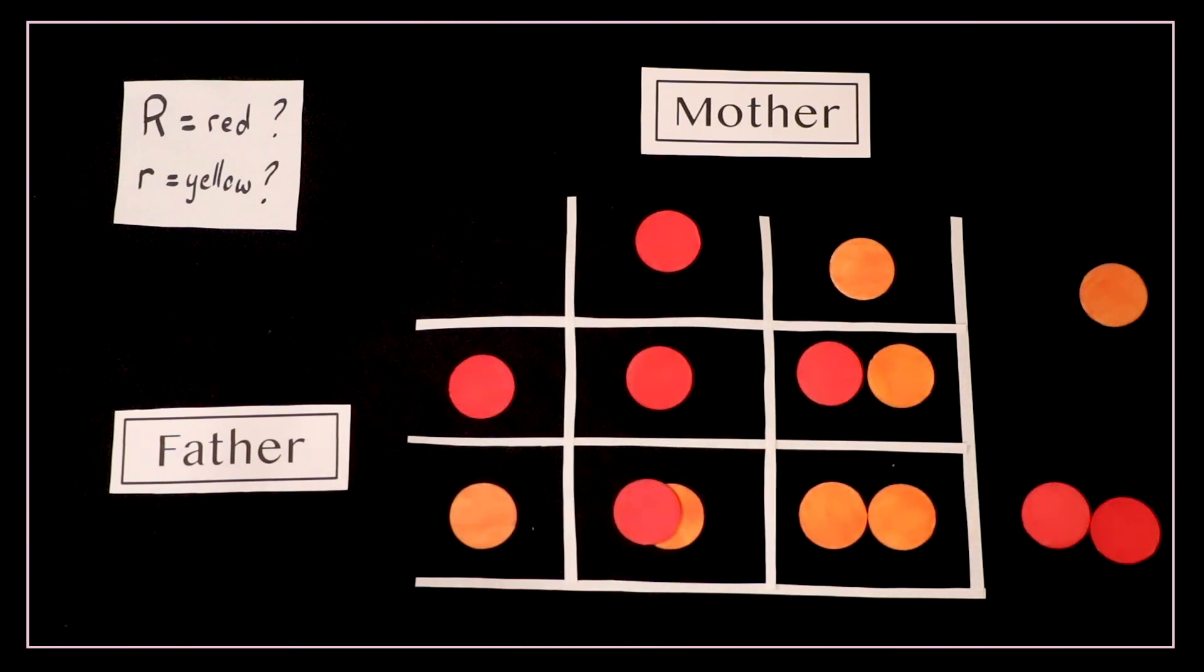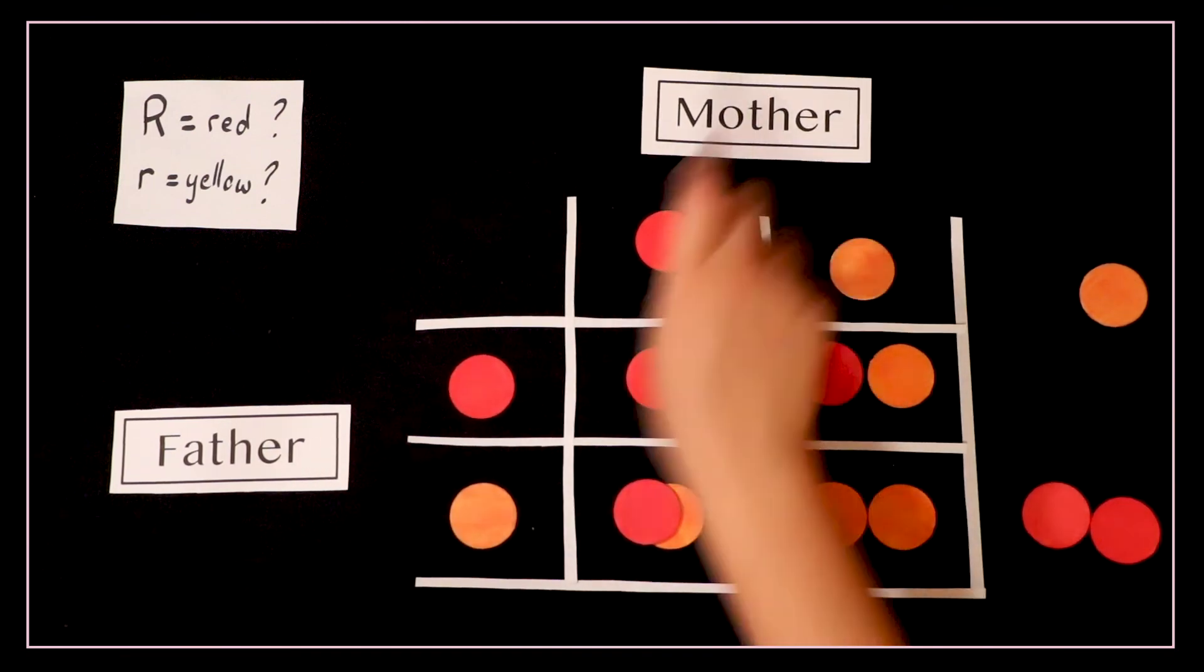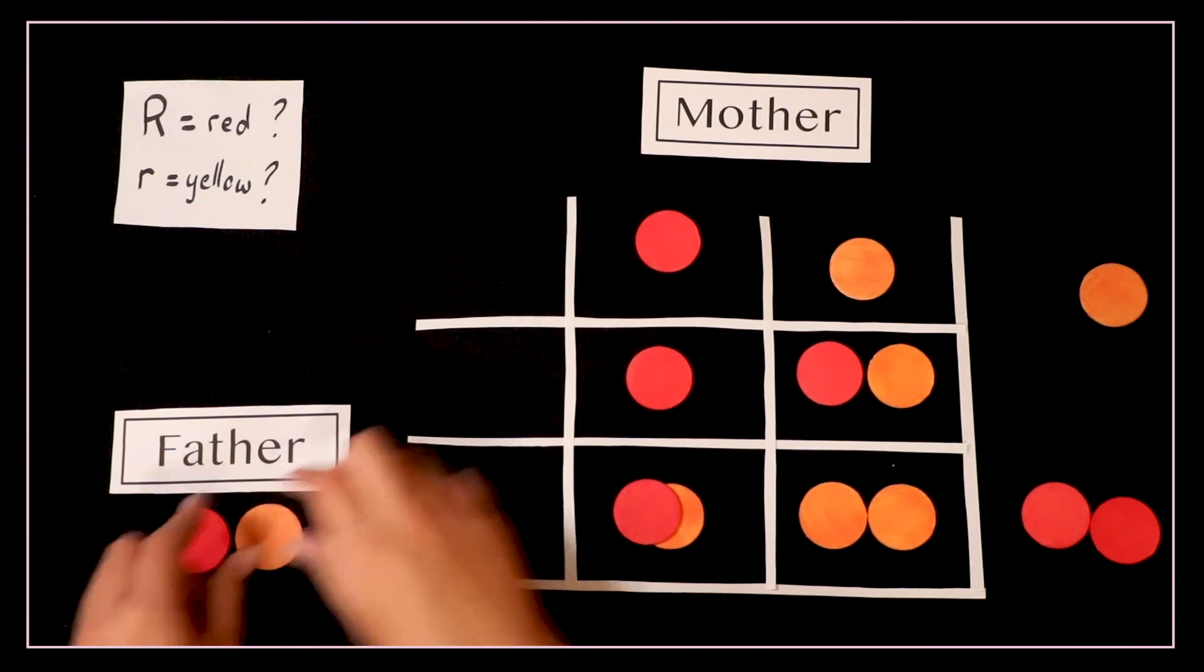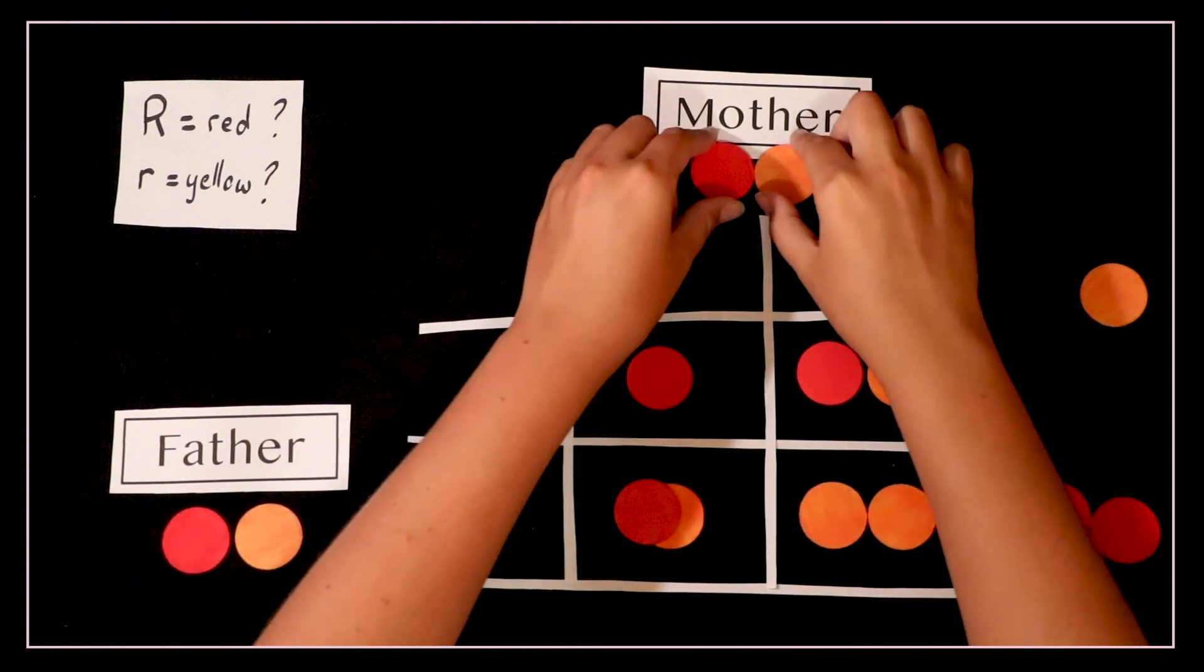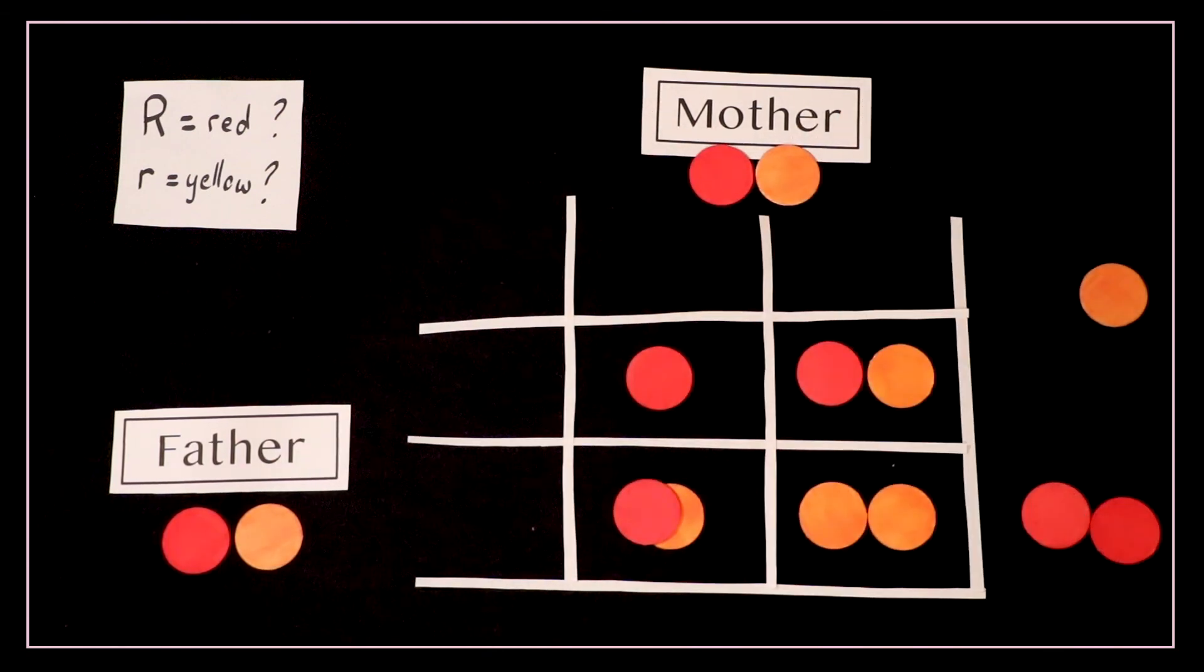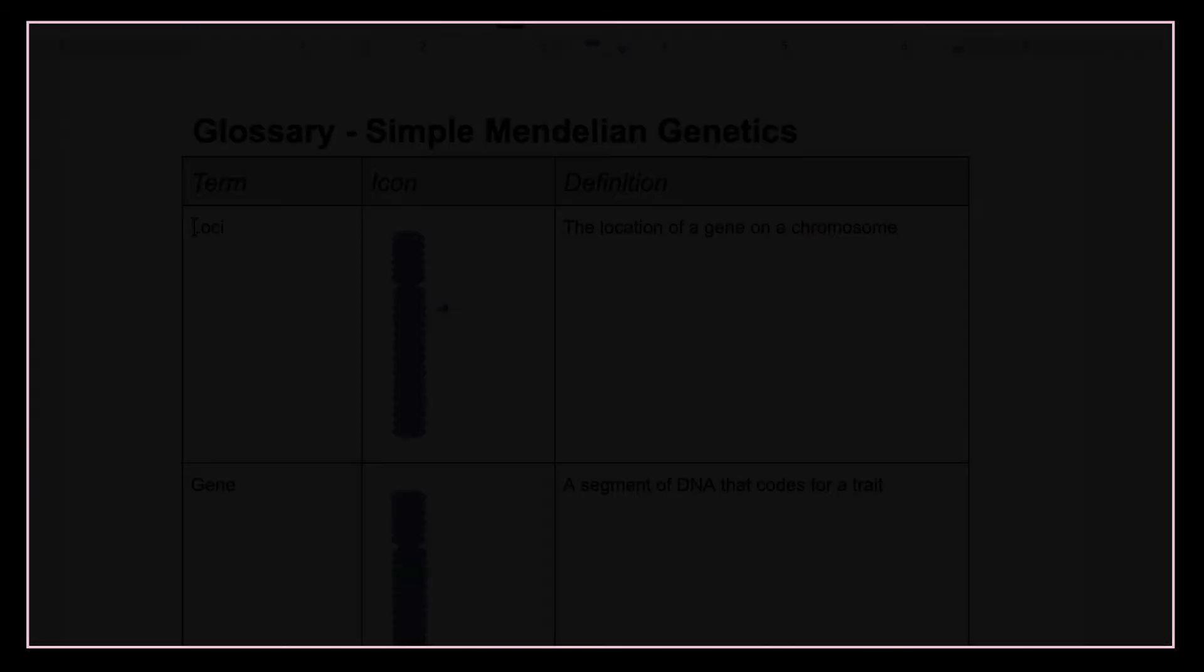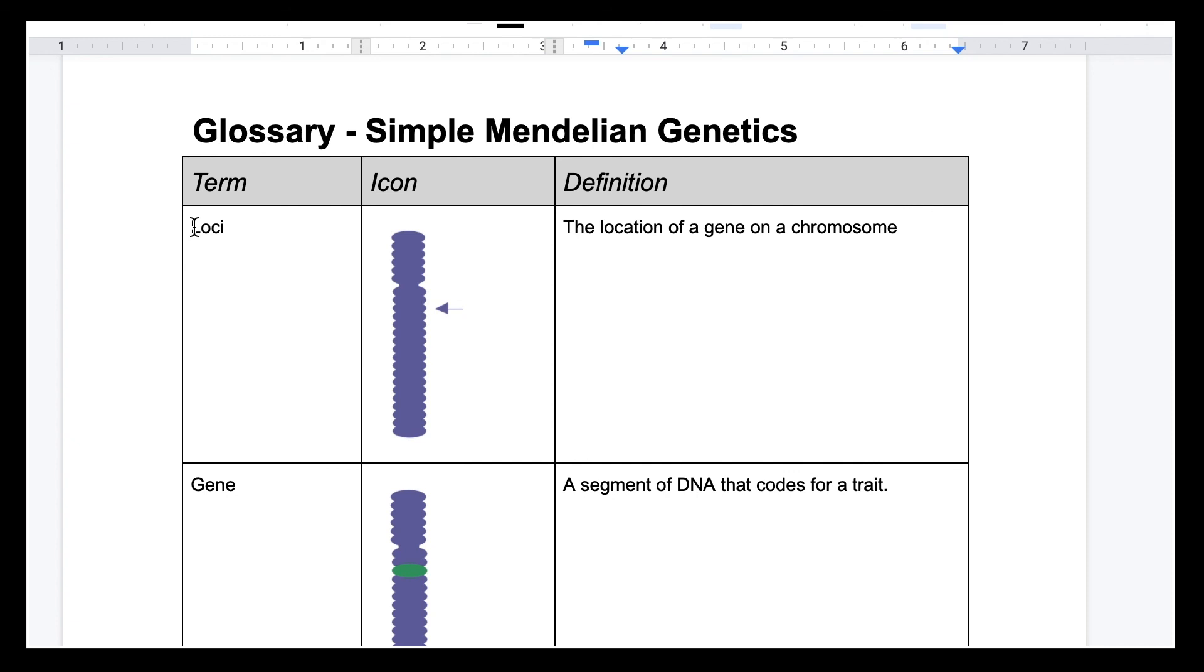Now we finish by answering the question. The genotype of the two parents are both heterozygous. I hope this gave you a good understanding of the fundamentals of Mendelian genetics. Remember to print out the glossary which can be found in the description if you think it would be helpful to you.